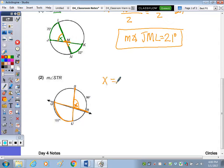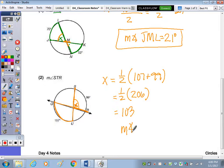it's the same theorem, I'll just write it this way, half the sum of 107 and 99. So adding first 107 and 99, we get 206. And half of that, we get 103. So the measure of angle S-T-R is 103 degrees.